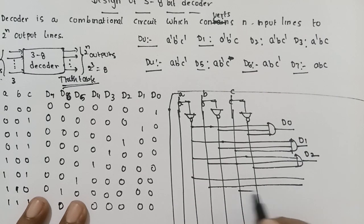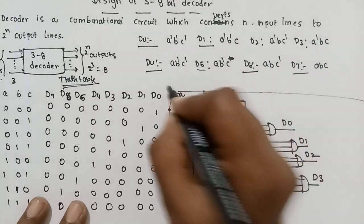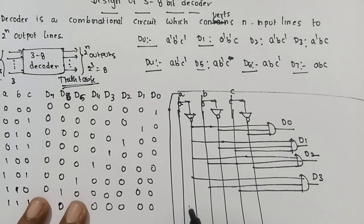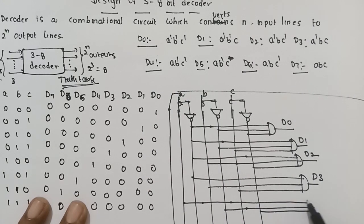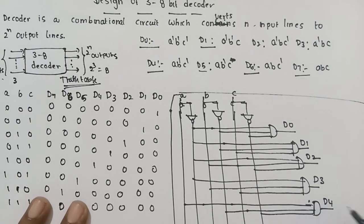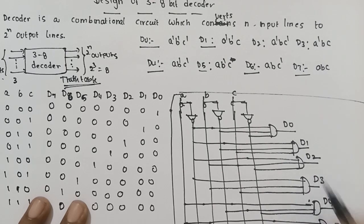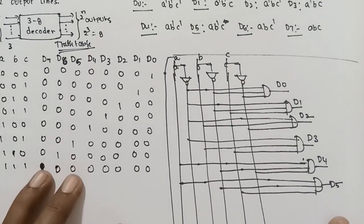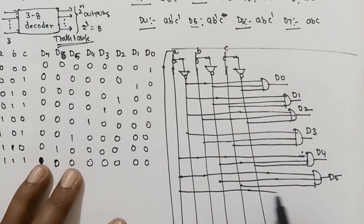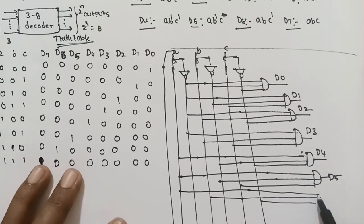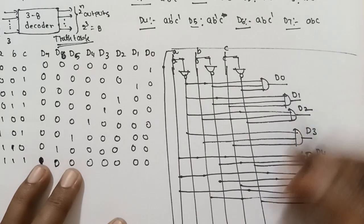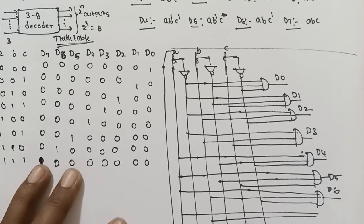For D4: A B' C' — A B' C' — AND gate — this is for D4. For D5: A B' C — A B' C — this is for D5. For D6: A B C' — A B C' — A B C' — this is for D6. For D7: A B C — A B C — this is for D7.